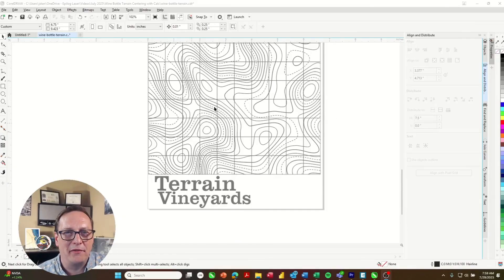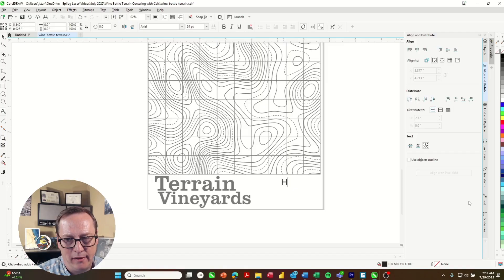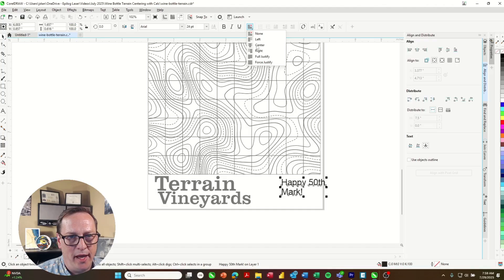So here in our graphic software we can see our image that we've engraved already which is this terrain map pattern. We've got the name of the vineyard so now we just need to add our custom message. In this area I'm just going to type in happy 50th Mark. We'll go ahead and center that.